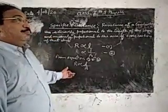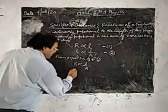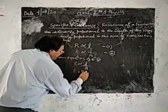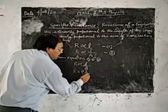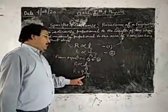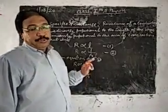But you have to remove the proportionality sign. So you use a constant which is rho. R equals rho L upon A.